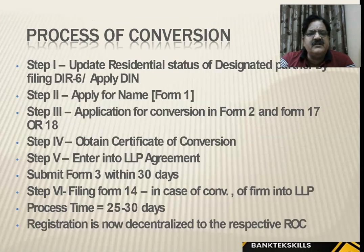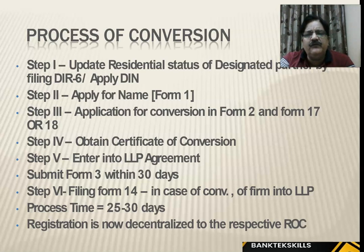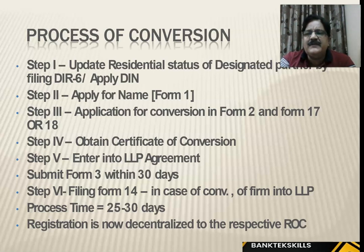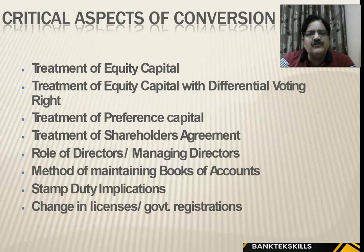The process of conversion is shown in the slide. You can note it down. Conversion is done using Form 2 and Form 17 or 18. Obtain the certificate of conversion, enter the LLP agreement within 30 days, submit Form 3, and file Form 14. All of this is centralized with the Registrar of Companies and can be done online.